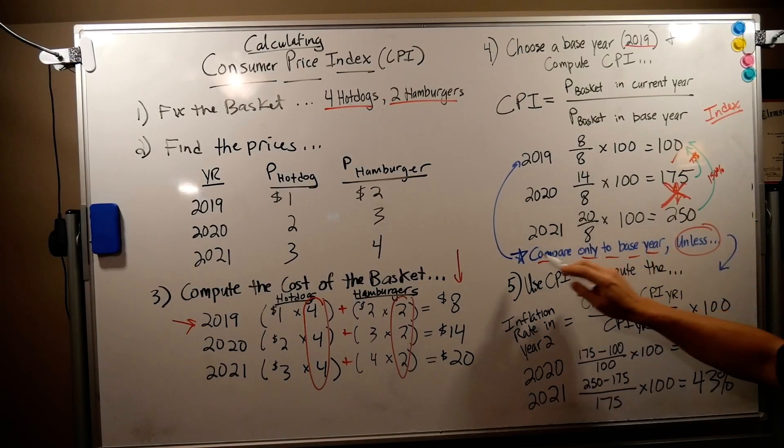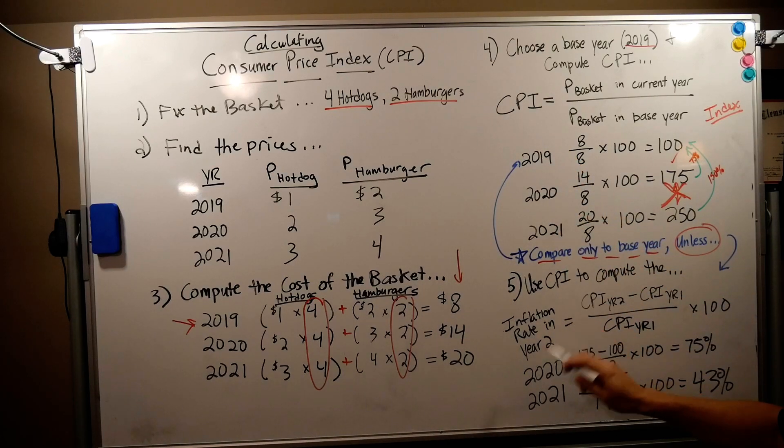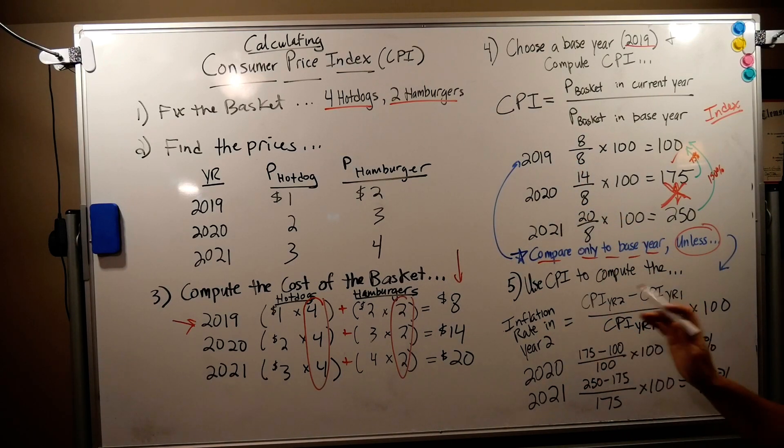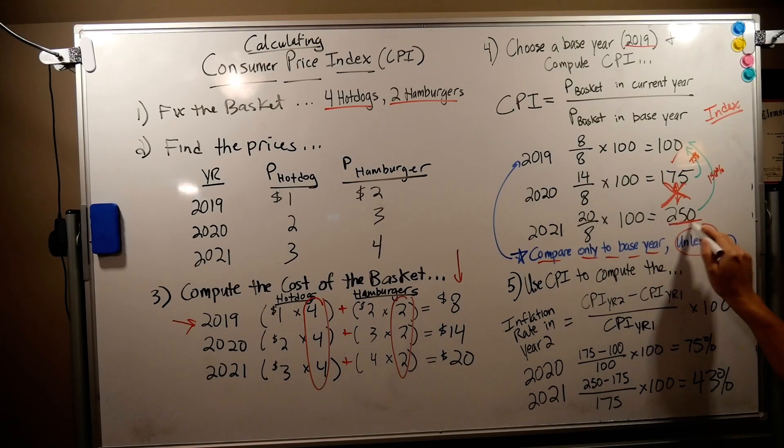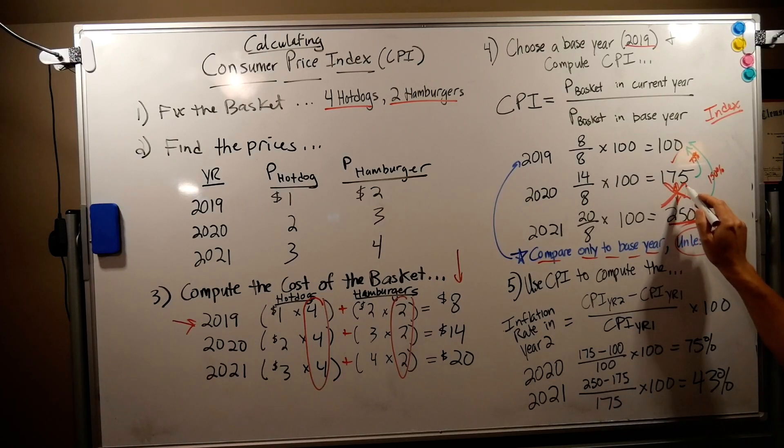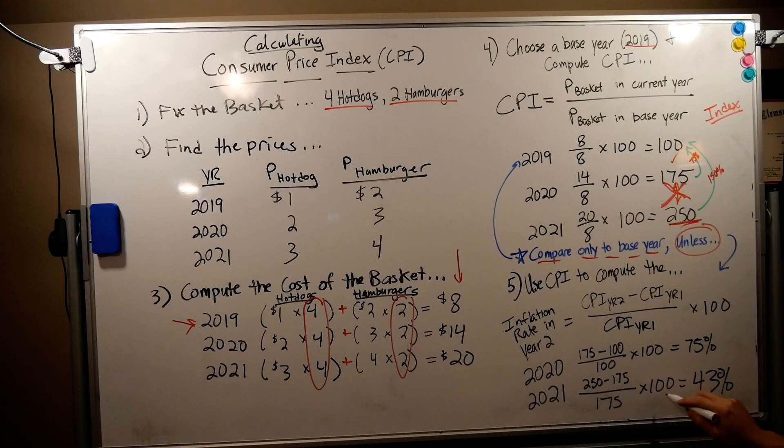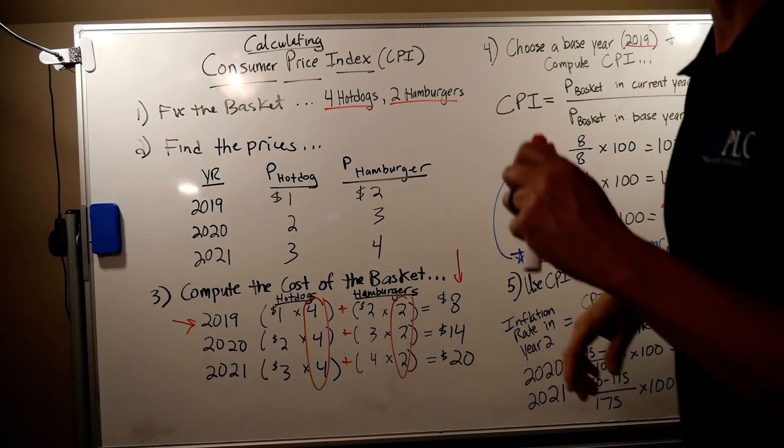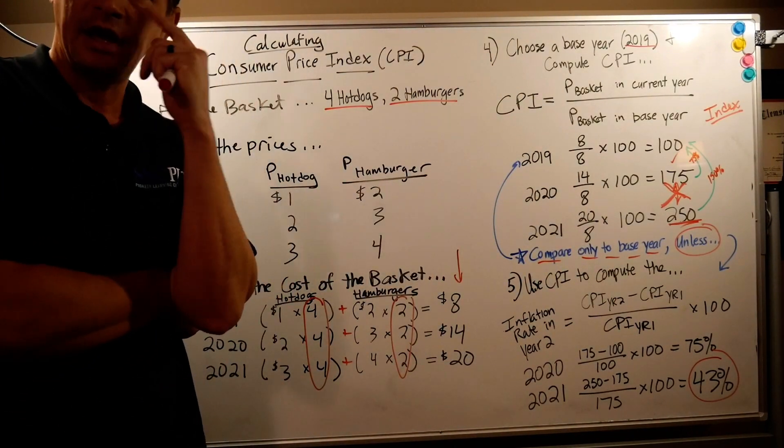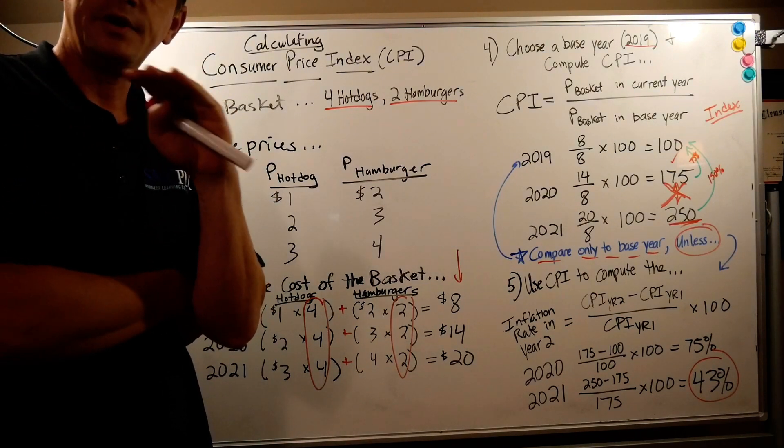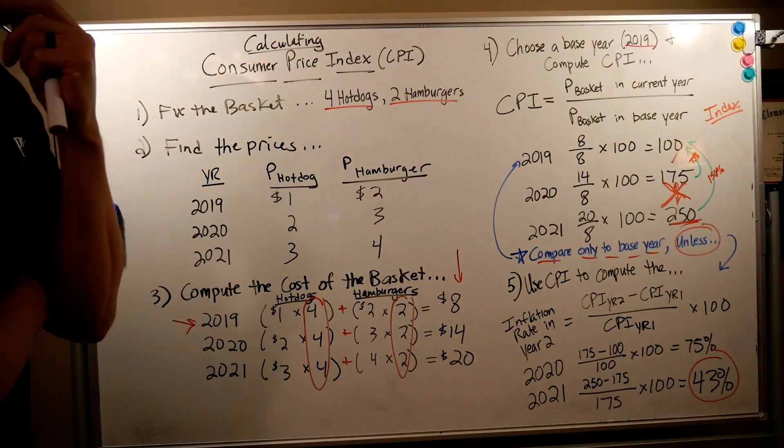We cannot compare non-base years. Do not do it. Some of you are going to do it. You already did it on the homework. You can't compare this. You always have to compare to the base year unless you do the inflation rate in year two calculation both with GDP deflator and CPI. It's like a different language you're speaking. Let's take CPI in year two which is our more recent year of 250, subtract out 175 which is the previous year, divide by 175 which is our new base year. We're expressing 2021 in 2020 dollars times 100 which is an index and we find out inflation was actually 43 percent. Now I can compare non-base years by using the inflation rate in year two equation.